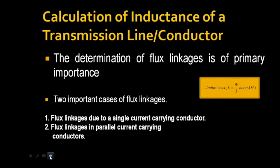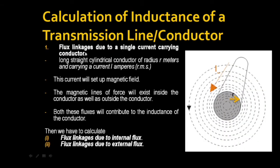Coming to the first topic — flux linkages due to a single current-carrying conductor — consider a long straight cylindrical conductor of radius r meters carrying a current I amperes (RMS value). This current will set up a magnetic field; the magnetic lines of force will exist inside the conductor as well as outside the conductor. Both these fluxes contribute to the inductance of the conductor.